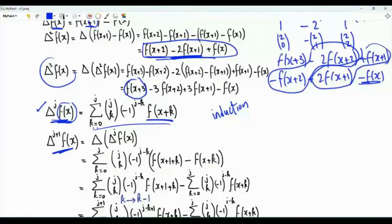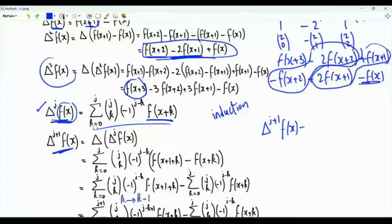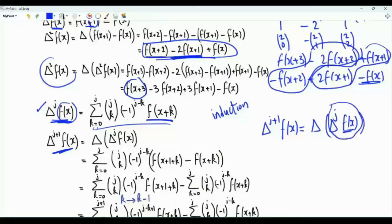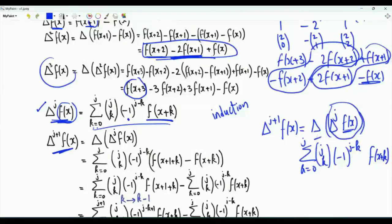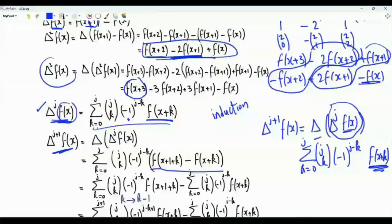We will show that the difference operator applied to f of x j plus 1 times is given by the same summation but with j replaced by j plus 1. Applying the difference operator j plus 1 times is equivalent to applying it once to f of x after applying it j times. By assumption that is given by this summation. The difference operator is linear, and when applied to f of x plus k, the result is f of x plus k plus 1 minus f of x plus k.